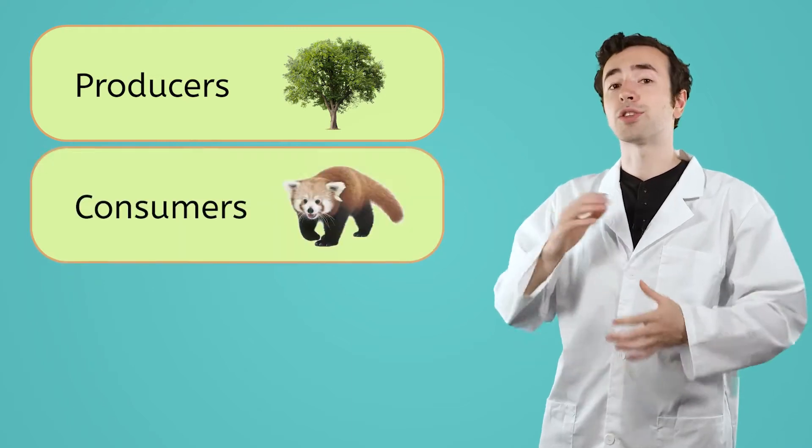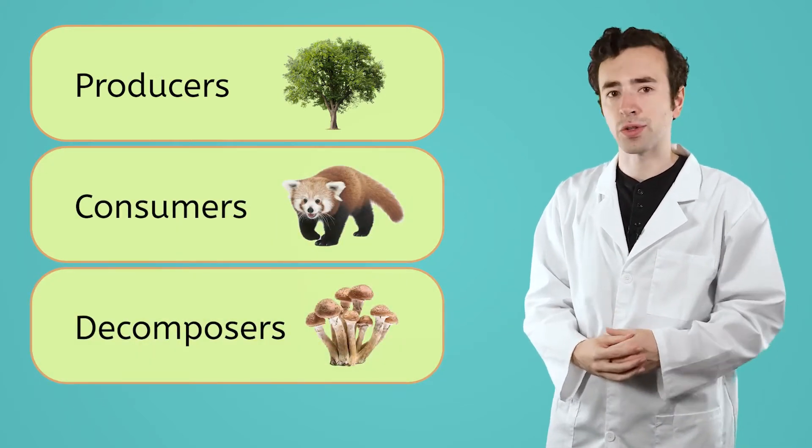Ecosystems need a constant flow of energy to keep their inhabitants alive and thriving. Living things in an ecosystem fall into three categories, all based on how they get energy: producers, consumers, and decomposers.